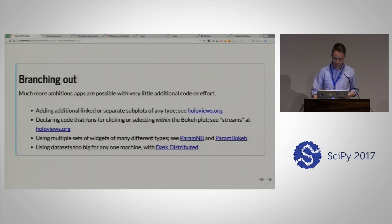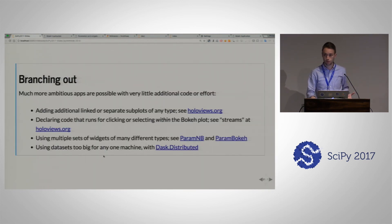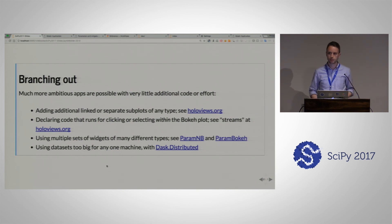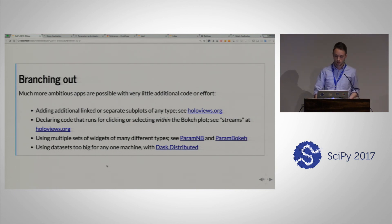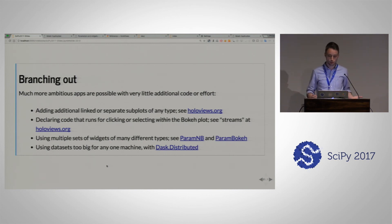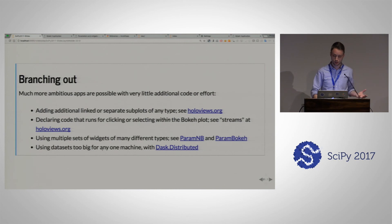If your data is actually too big for one machine — one billion points is just on the edge of what you can process on one machine — and you want to scale out to larger things, you might want to use Dask distributed, which will let you do the computation on a cluster.